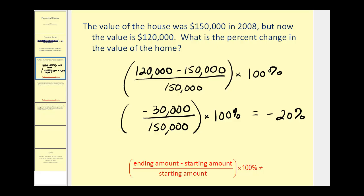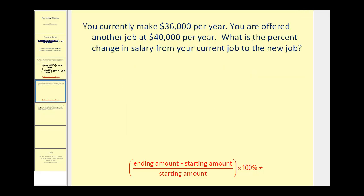Let's try another one. You currently make $36,000 per year, and you were offered another job at $40,000 per year. What is the percent change in salary from your current job to the new job?